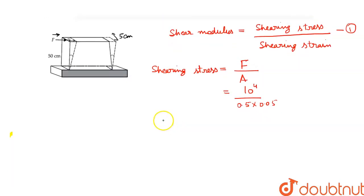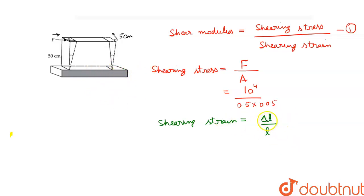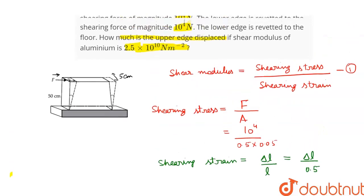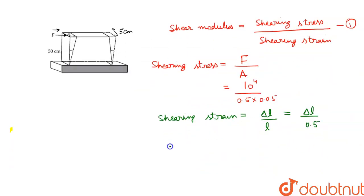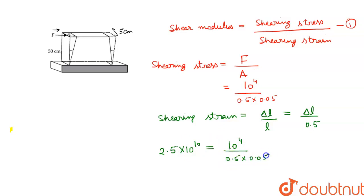Now the shearing strain will be equal to delta L upon L, where delta L is the displacement of the upper edge and L is the length of the slab. So let us substitute the values. Delta L we have to calculate, and the length of the slab is 0.5 meters. Substituting in equation 1: shear modulus 2.5 into 10 raised to the power 10 is equal to shearing stress 10 raised to the power 4 upon 0.5 into 0.05, into 0.5 upon delta L.